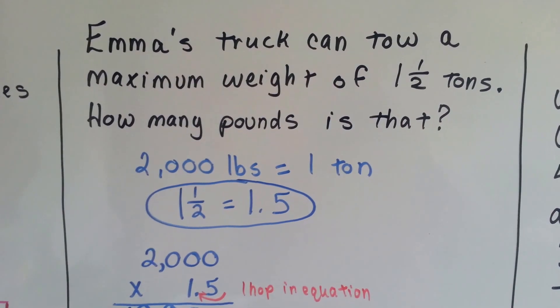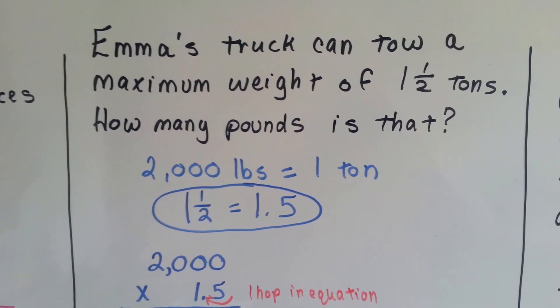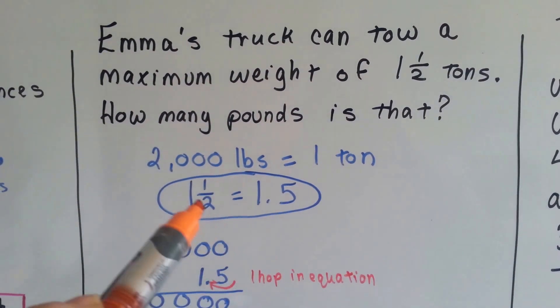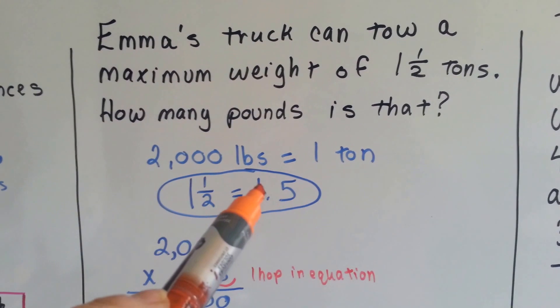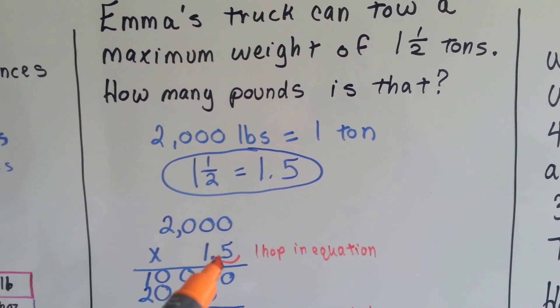Emma's truck can tow a maximum weight of 1.5 tons. How many pounds is that? Well, 2,000 pounds is equal to 1 ton, and we know 1.5 is equal to 1.5, so we can multiply 2,000 times 1.5.